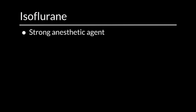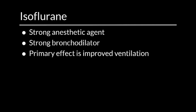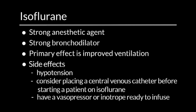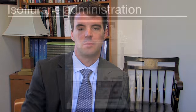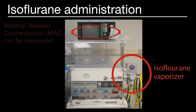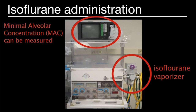Regarding inhalation anesthetics: isoflurane is the preferred agent — a strong anesthetic and also a strong bronchodilator, and has been used in patients with asthma. The primary effect is improved ventilation due to its bronchodilatory effects. However, significant side effects must be considered, especially hypotension. Most patients with severe asthma exacerbation are at risk for hypotension, so we often place a central line before starting isoflurane and have a vasopressor or inotrope such as dopamine ready. Isoflurane vaporizers attach to the ventilator, and a monitor measures the minimal alveolar concentration of isoflurane.